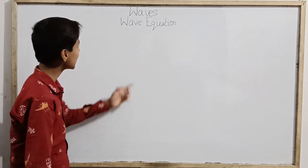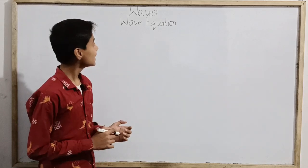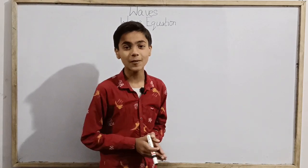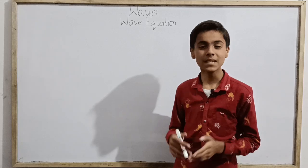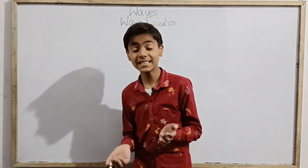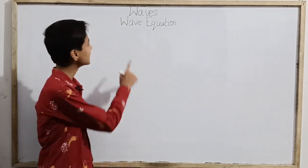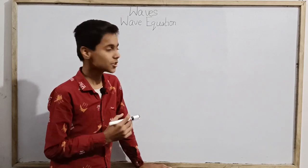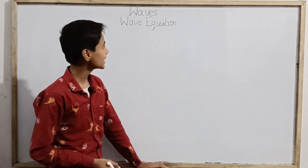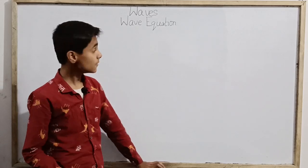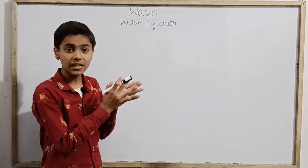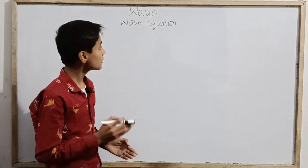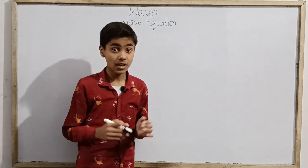As we know, the wave equation was discovered by the great physicist and mathematician Brook Taylor, who is known for his great contributions in mathematics like the Taylor series, Taylor theorem, integration by parts, and finite differences. This wave equation is also one of his contributions, published in those times.